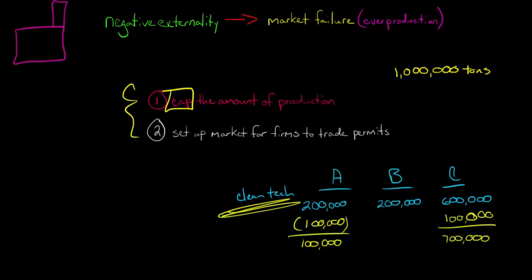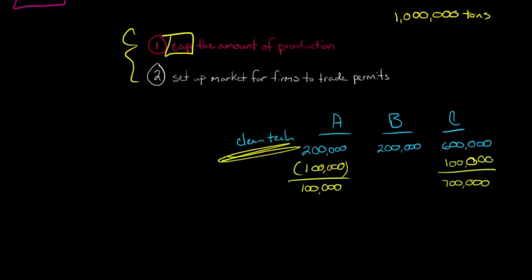And then we also, as a society, get the peace of mind of knowing that a million tons is the amount of sulfur dioxide that can be produced, and that's it. Now, I want to show you with a graph how this is basically equivalent to using a Pigouvian tax, which we talked about before with setting a corrective tax.